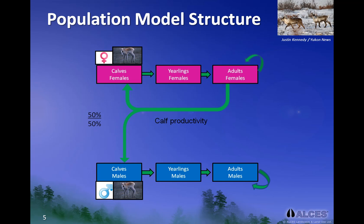Another important assumption is that female and male calves are born into the population at an even sex ratio. In contrast, the red arrows represent the number of animals leaving each of the six stocks in this model — simply put, the red arrows represent rates of death or mortality rates.